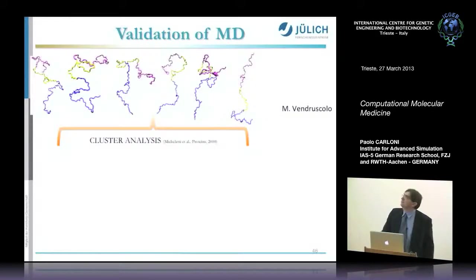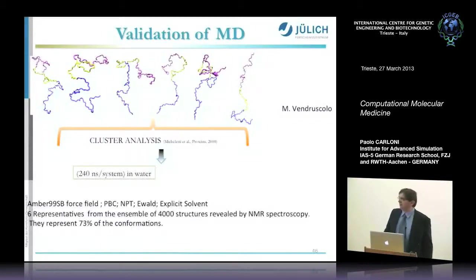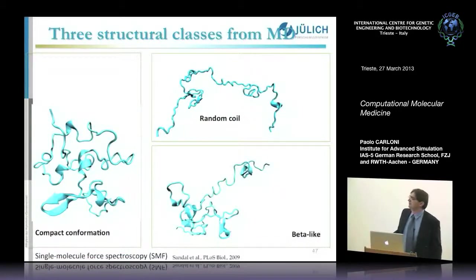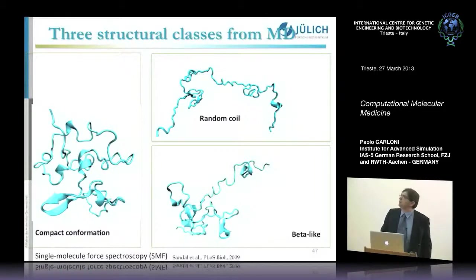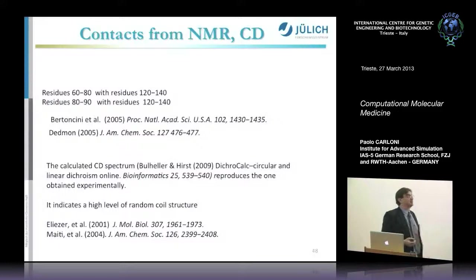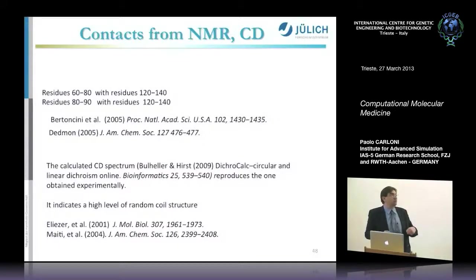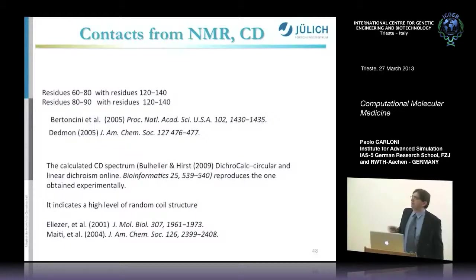The first thing we do to face this immense complexity is a cluster analysis to identify representative structures—those which within a certain cutoff are similar to the other thousand structures. Then we run our simulations, which involve enormous, very large calculations. We were very happy to find types of structures consistent with single molecule spectroscopy. We can also calculate the CD spectrum: since we don't have one structure, we weight each representative, calculate the spectrum of each one, and combine them.